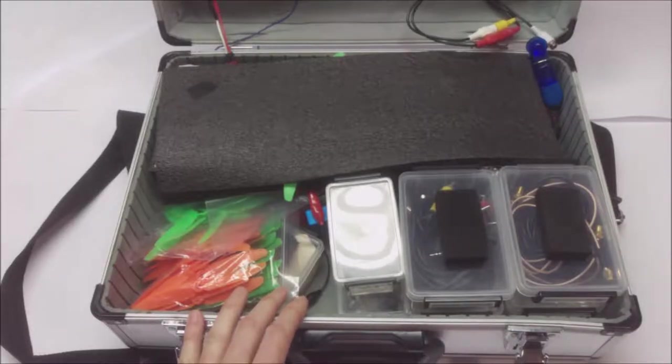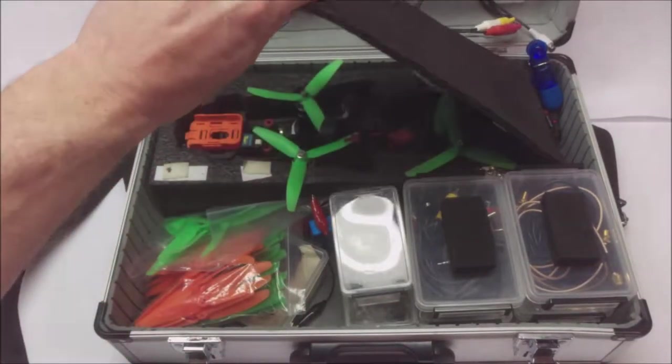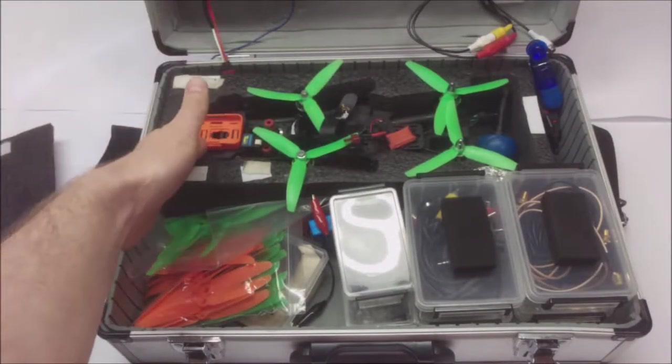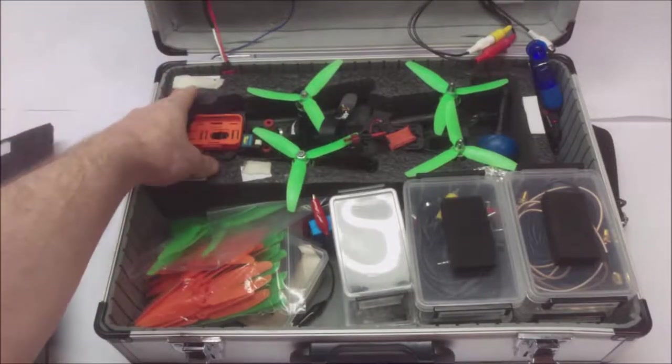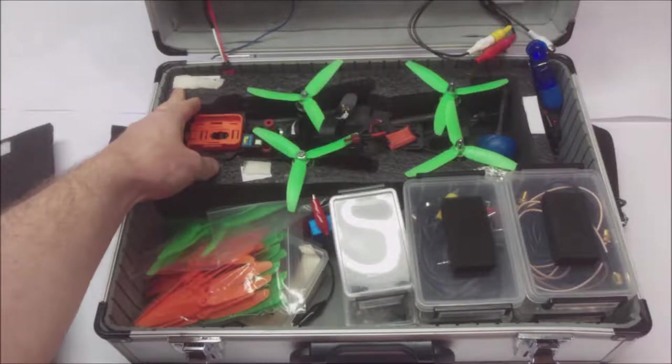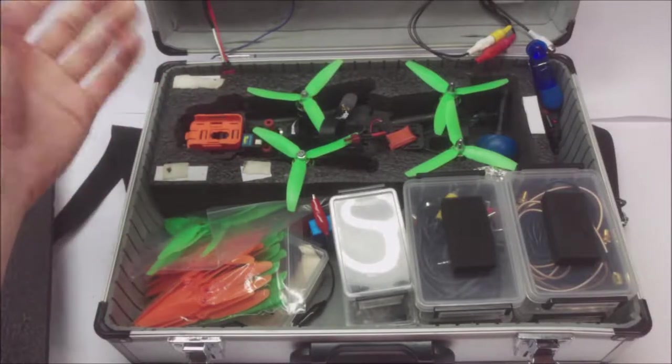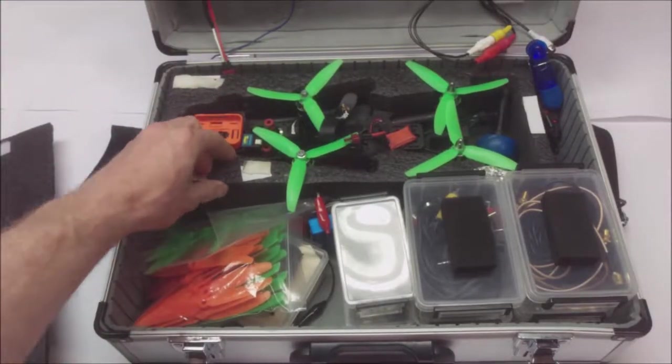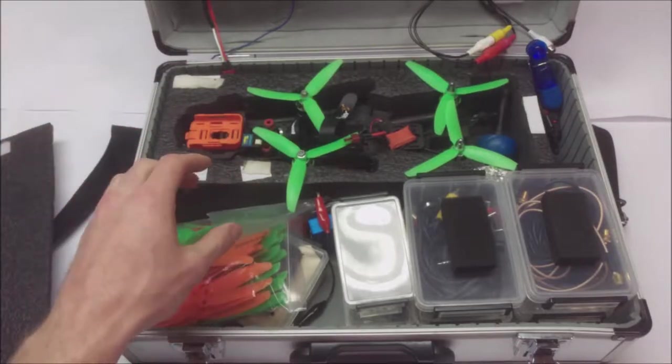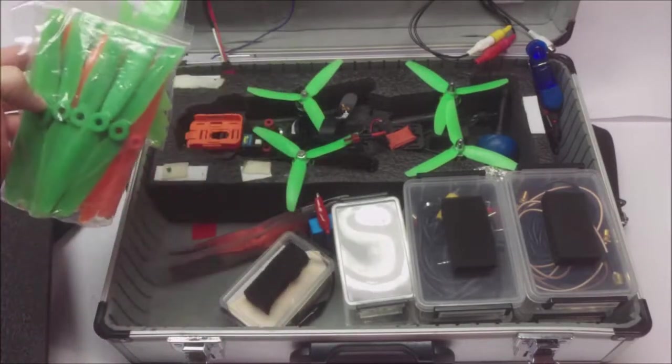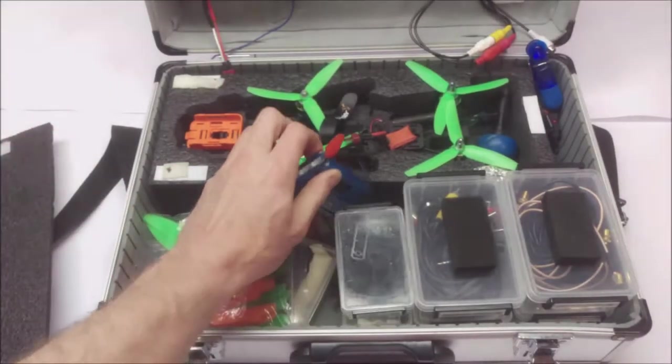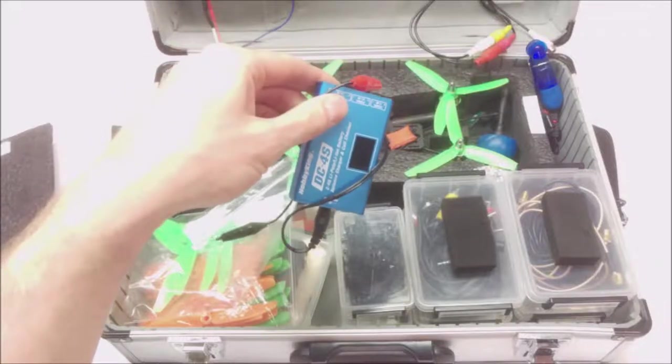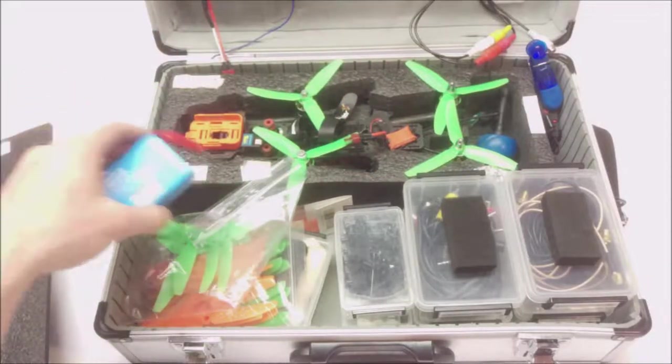So in here, I've got my Vortex 285. The foam here is just right out of the package that the Vortex came in, it's kind of glued to the bottom. I've got a bunch of spare propellers. I've got a small 12 volt charger if I want to charge something off my car.